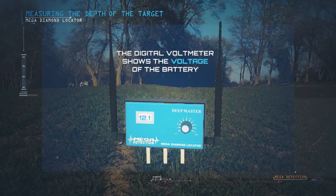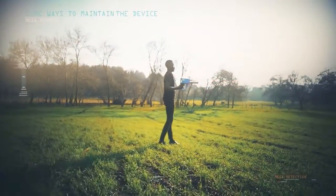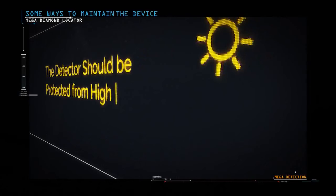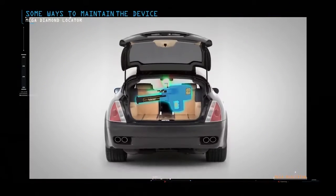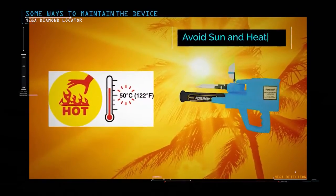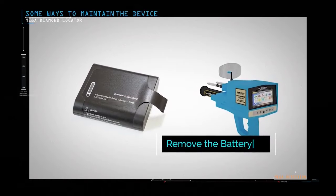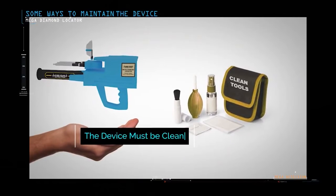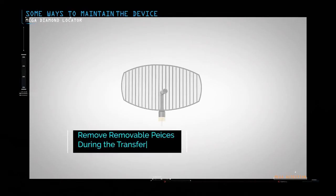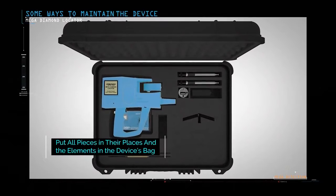The digital voltmeter on the DeepMaster shows the voltage of the battery. Some ways to maintain the device: The detector should be protected from high levels of heat and cold. The device must not place in the back of the car or under the sun on hot summer days or outdoors in a winter. Remove the device battery if you do not plan to use the device for extended periods such as a month or more. The device must always be kept clean after each use. During the transfer of your device, remove removable pieces of the device such as search antennas, sensors, etc. Please place the device in its bag and the specified place inside the bag, and the pieces should not be placed in other places.